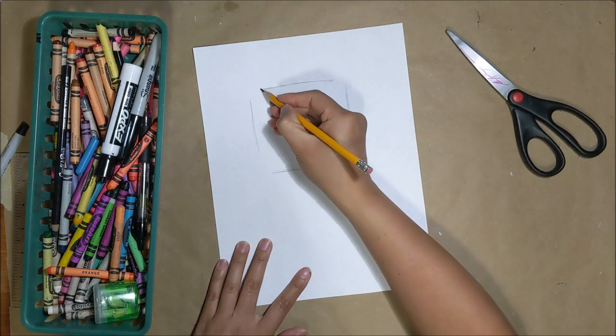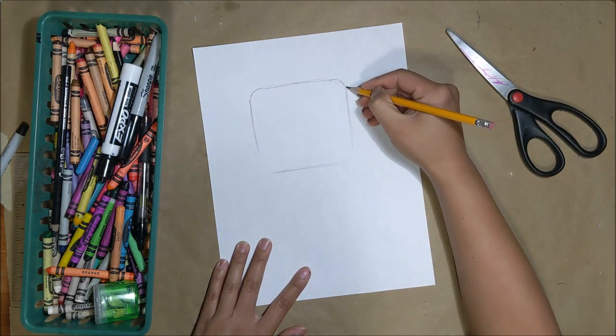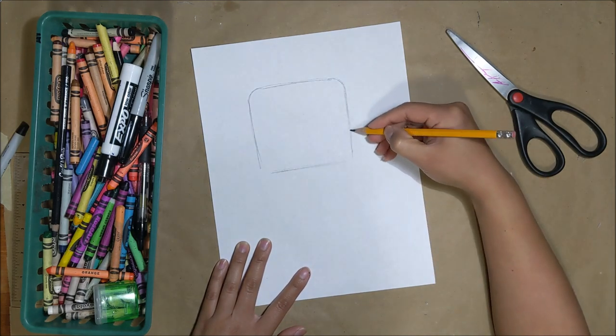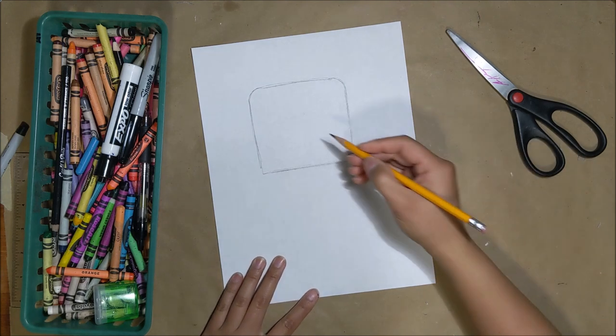I will soften the corners on the top. Now I'm connecting all my sides. So there is my square with two softer corners on top.